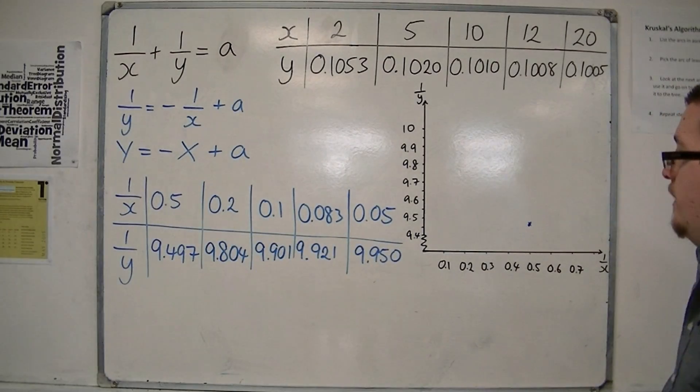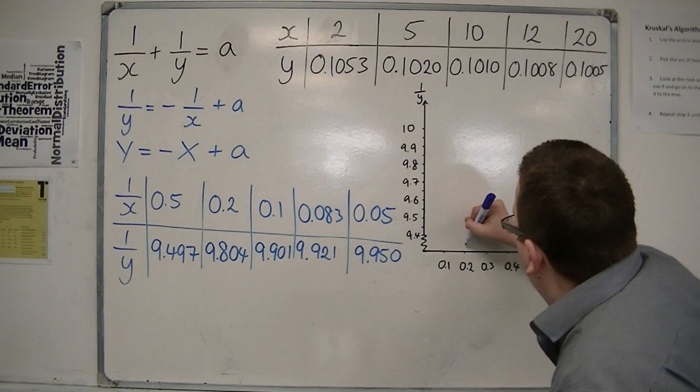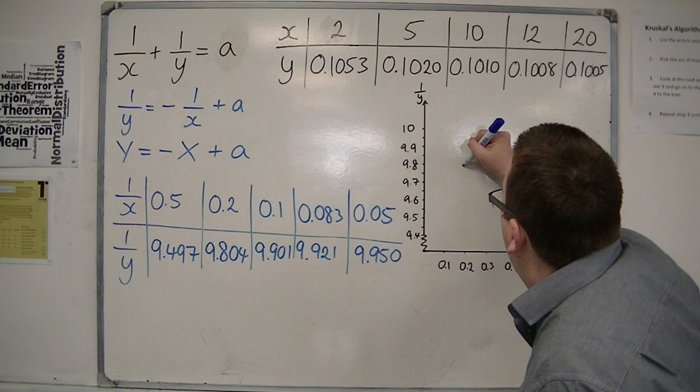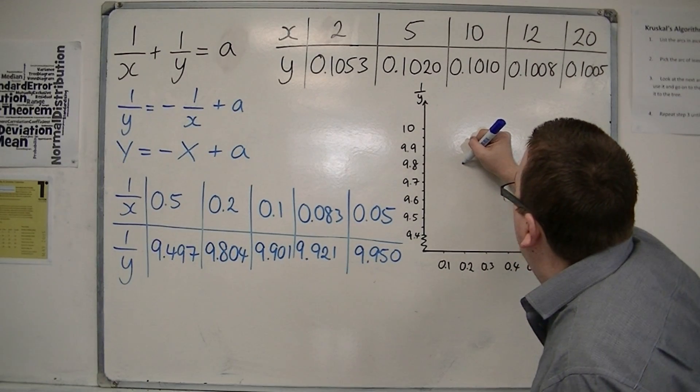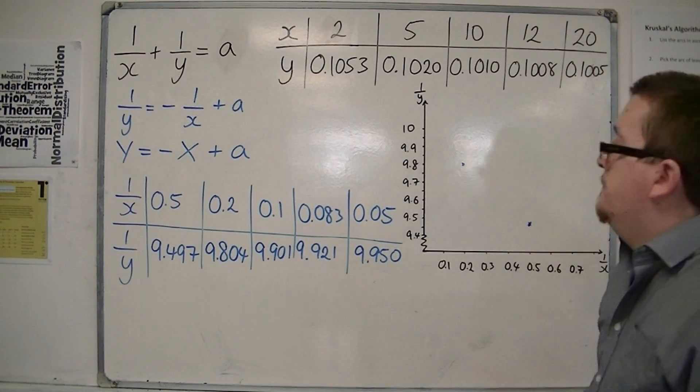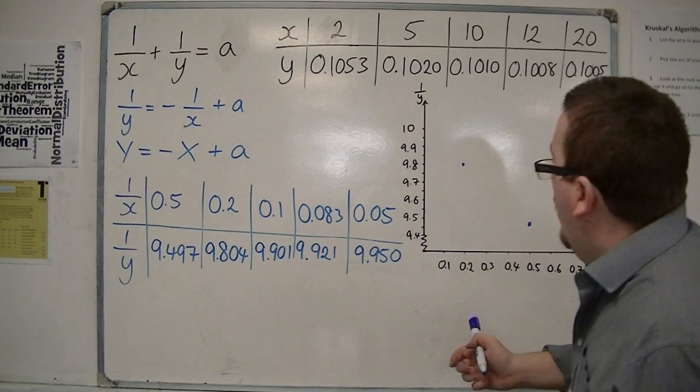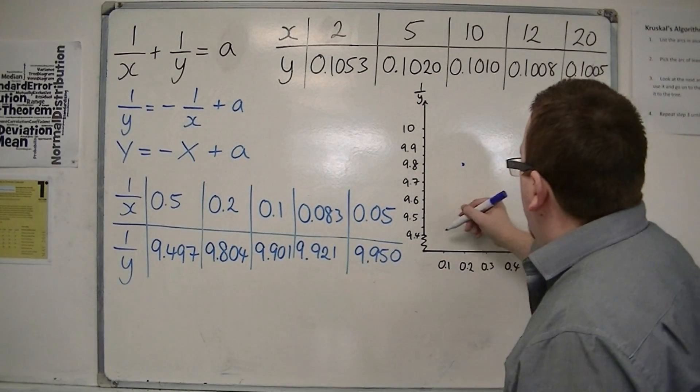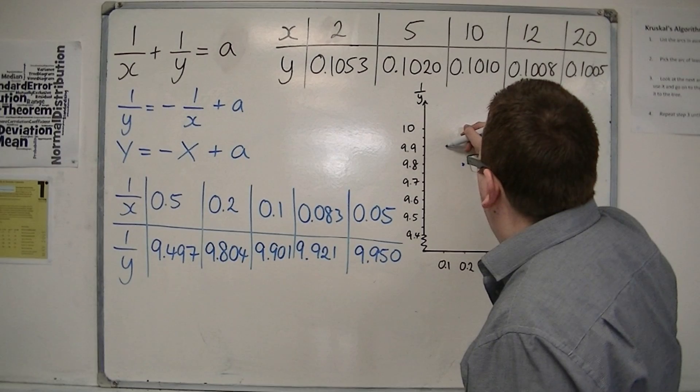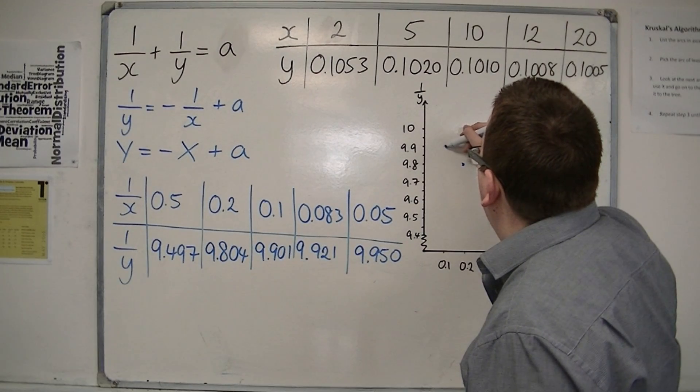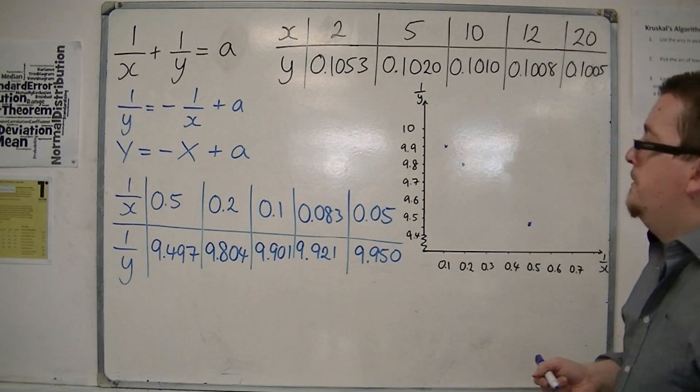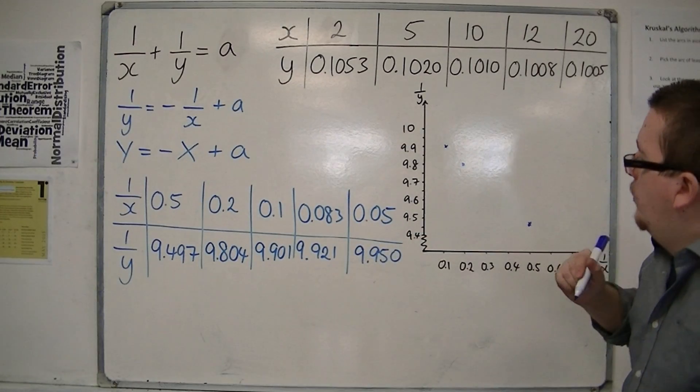So 0.2, 9.804, so 0.2, 9.804, so I reckon it's just about there. And then 0.1, 9.901, 9.901, so probably about there.